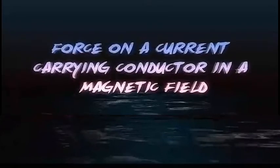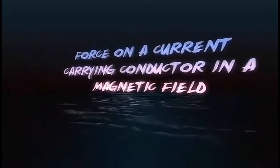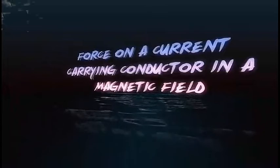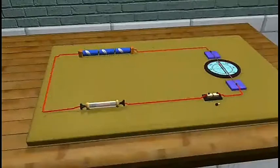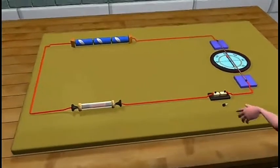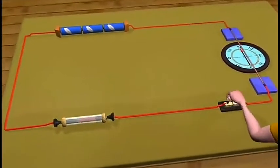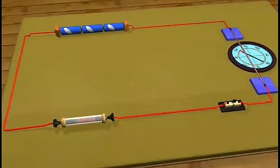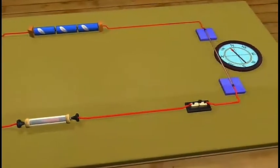Force on a current carrying conductor in a magnetic field. We know that an electric current flowing through a conductor produces a magnetic field. The field so produced exerts a force on a magnet placed in the vicinity of the conductor.